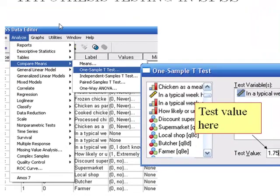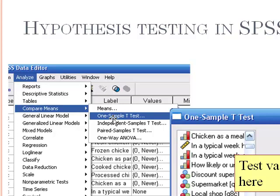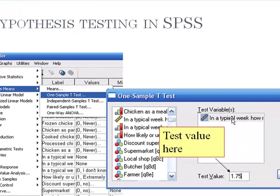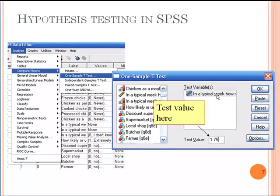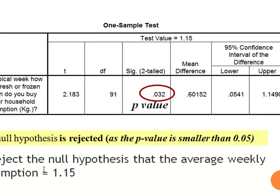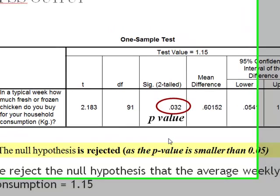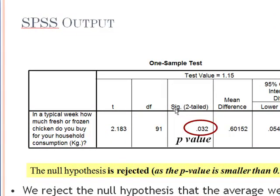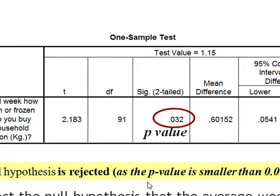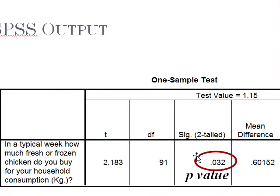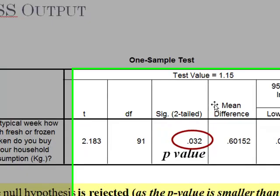In SPSS you say analyze compare means one sample t-test and then select the variable. Once you estimate the test this is the SPSS output and the p-value which SPSS would always say significance level and two-tailed is 0.032. The null hypothesis is rejected because the p-value is smaller than 0.05.